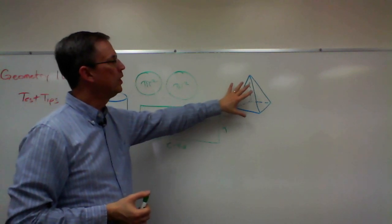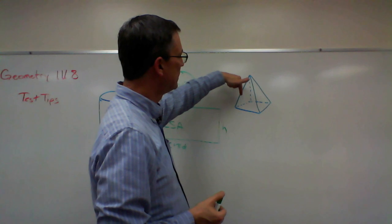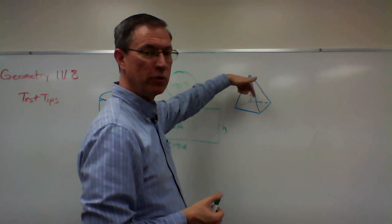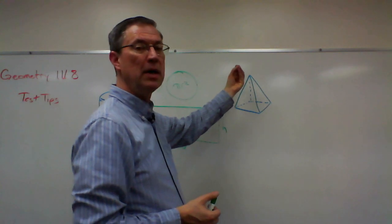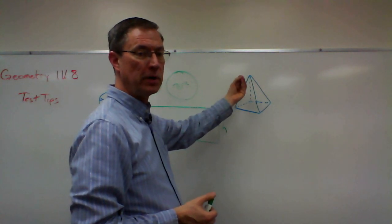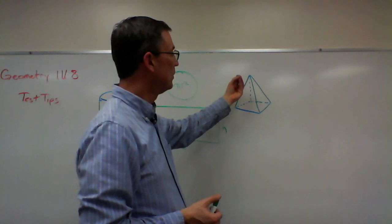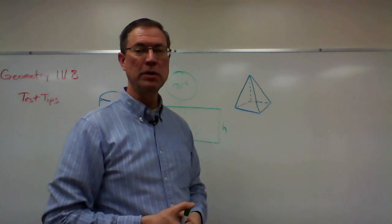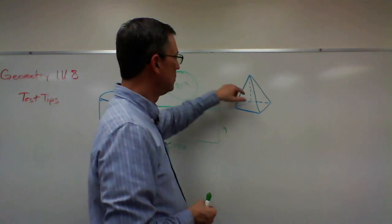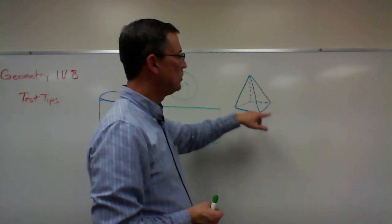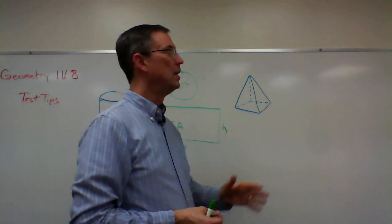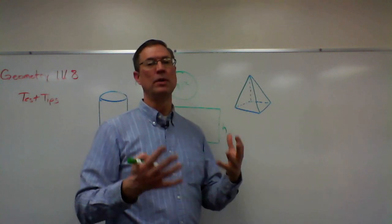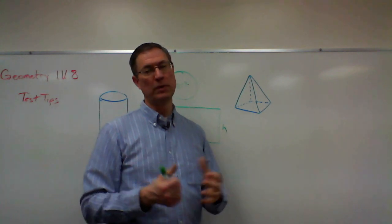Same thing here with a pyramid. Lateral surface area would just be the four triangles, the area of the four triangles. You add those up and you have the lateral surface area. But to get the total surface area, you also have to add the area of the bottom. I always picture this like a tent. These are the sides of the tent, but inside you have the floor of the tent. So to have the total surface area, you have to include the floor with the walls in order for you to have total surface area.